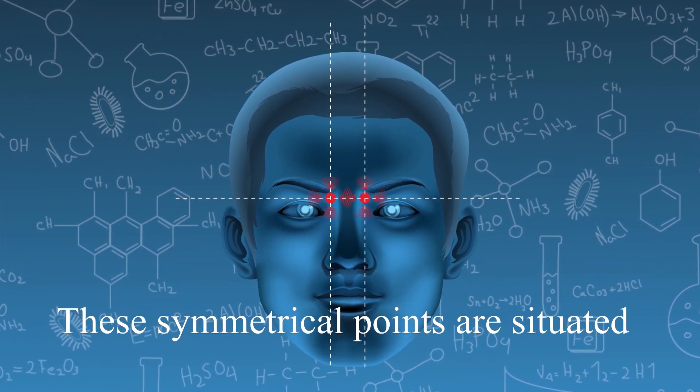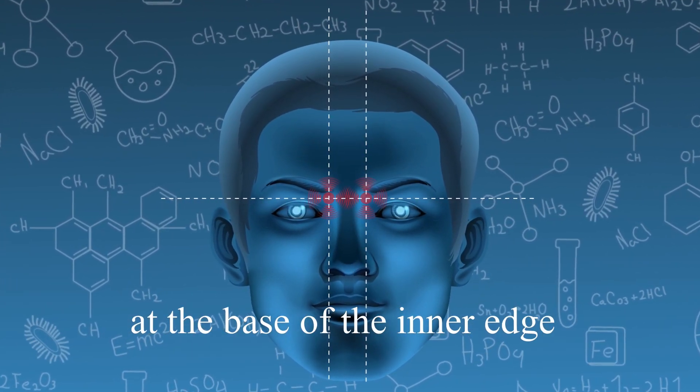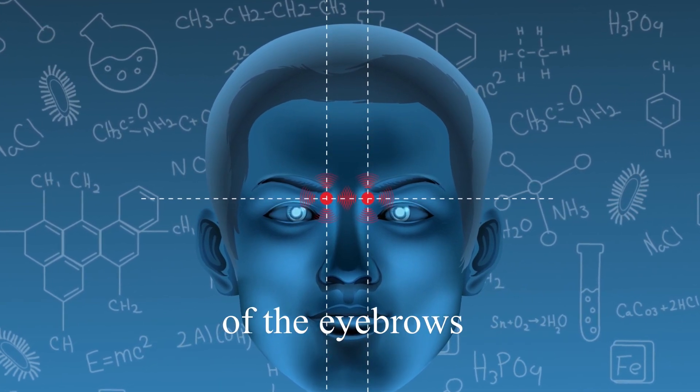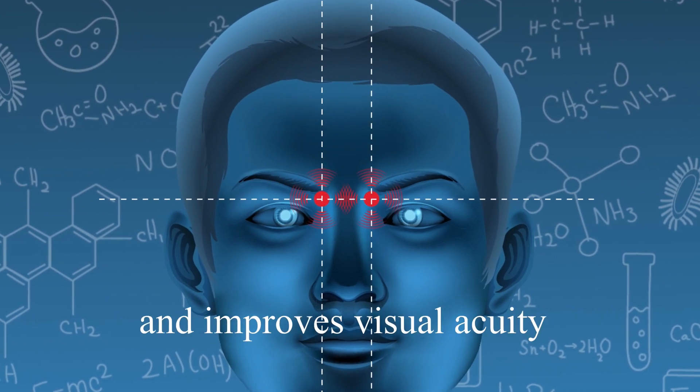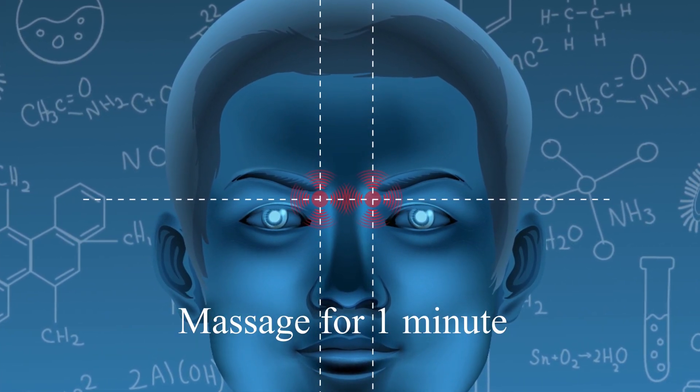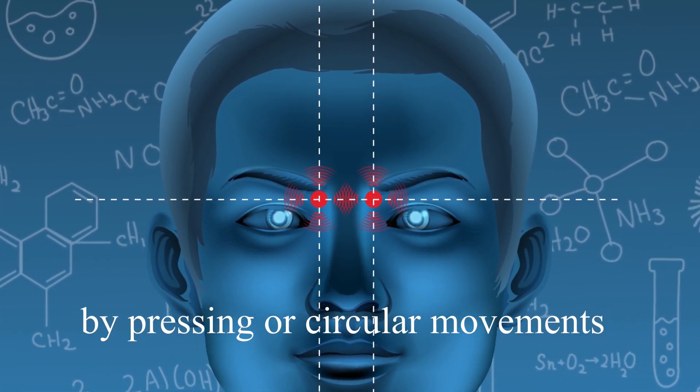Janju Point. The symmetrical points are situated at the base of the inner edge of the eyebrow. Massage of this area also relieves a runny nose and improves visual accuracy. Massage for 1 minute by pressing or circular movement.